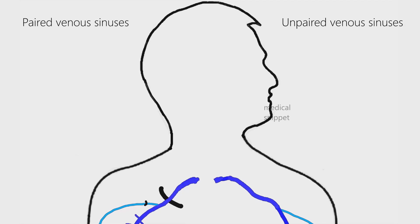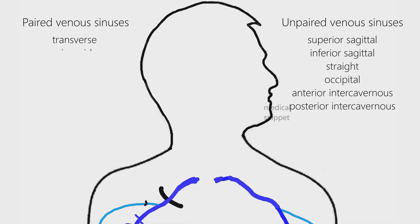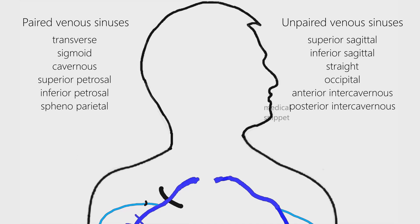Unpaired sinuses are: superior sagittal, inferior sagittal, straight, occipital, and anterior and posterior intercavernous sinuses. The paired sinuses are: transverse, sigmoid, cavernous, superior petrosal, inferior petrosal, and sphenoparietal sinuses.